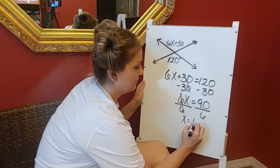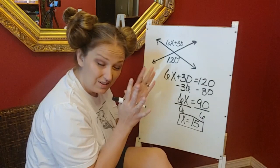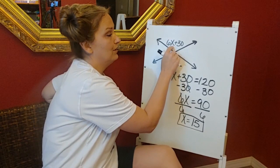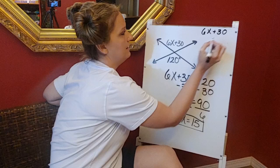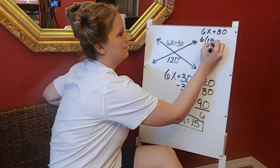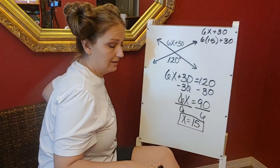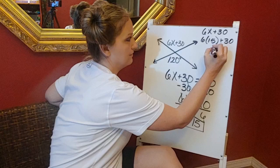So to check your work, make sure you did this correctly, you can take that 15 and put it back in for x up here. So 6x plus 30, I'm going to take 15 and put it in for x. So 6 times 15 plus 30, and just type that in your calculator. 6 times 15 plus 30 gives me 120. So this has to be 120, this is 120, all of it checks out.